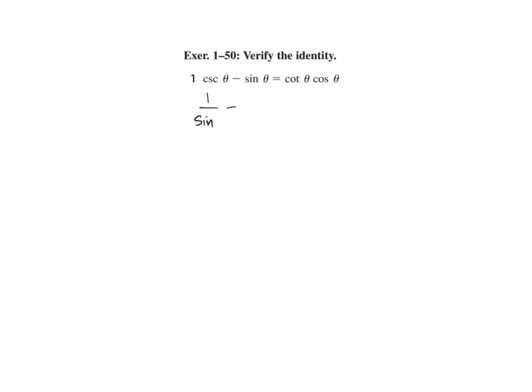We're going to start with the basics. Cosecant is 1 over sine, and then we have sine here. We need a common denominator, so we're going to multiply by sine over sine to get the denominators the same. When we do that, it's 1 minus sine squared over sine.